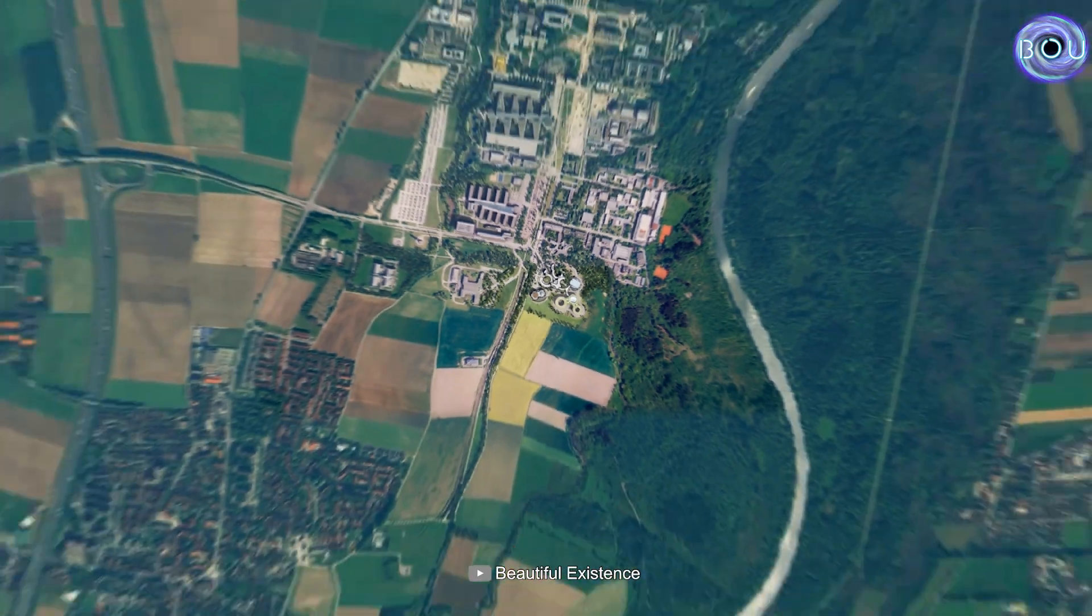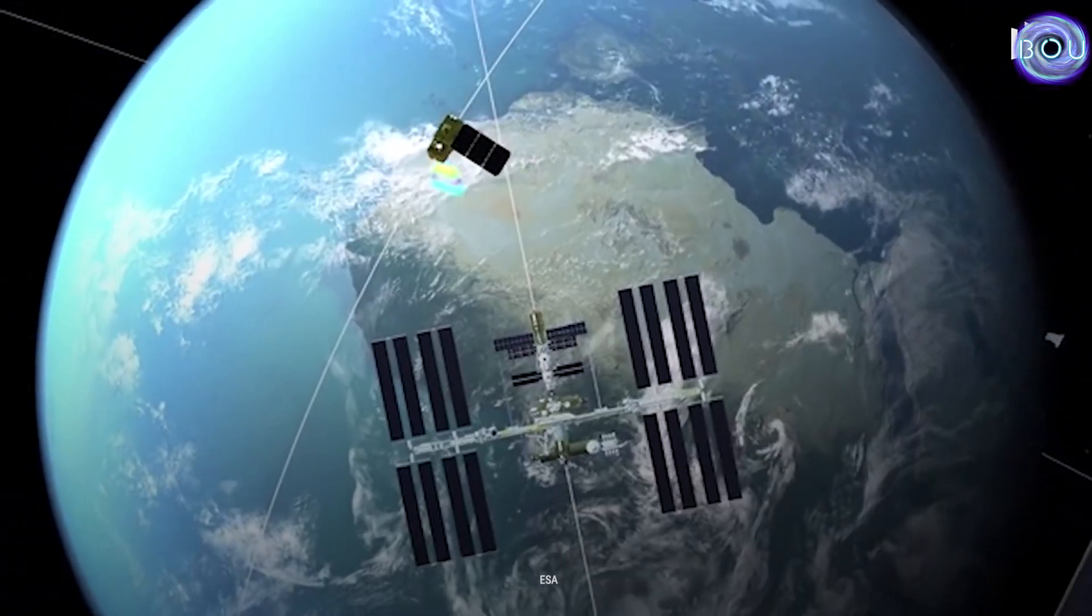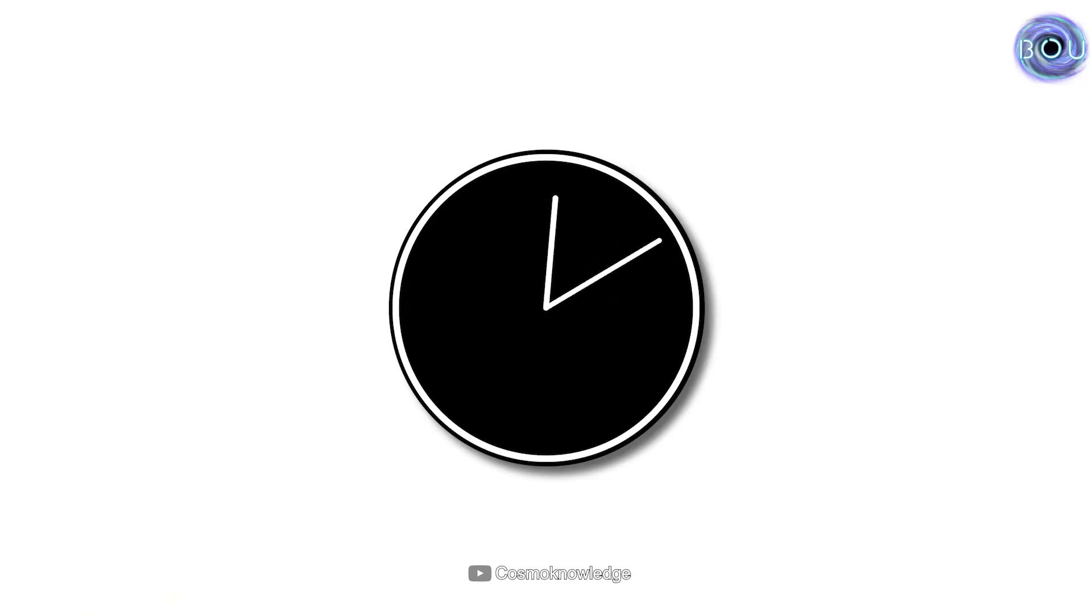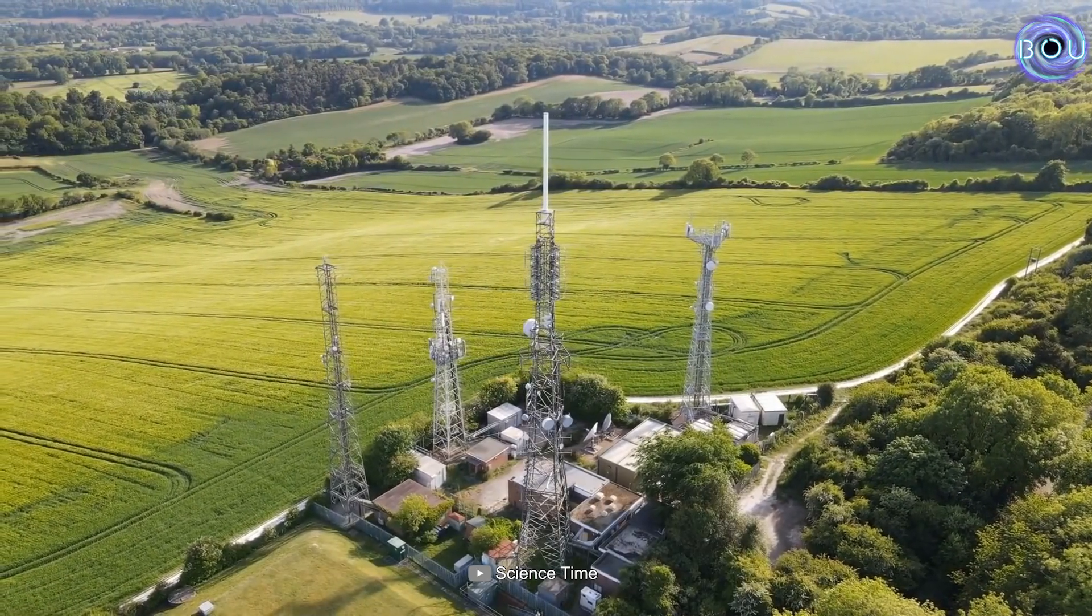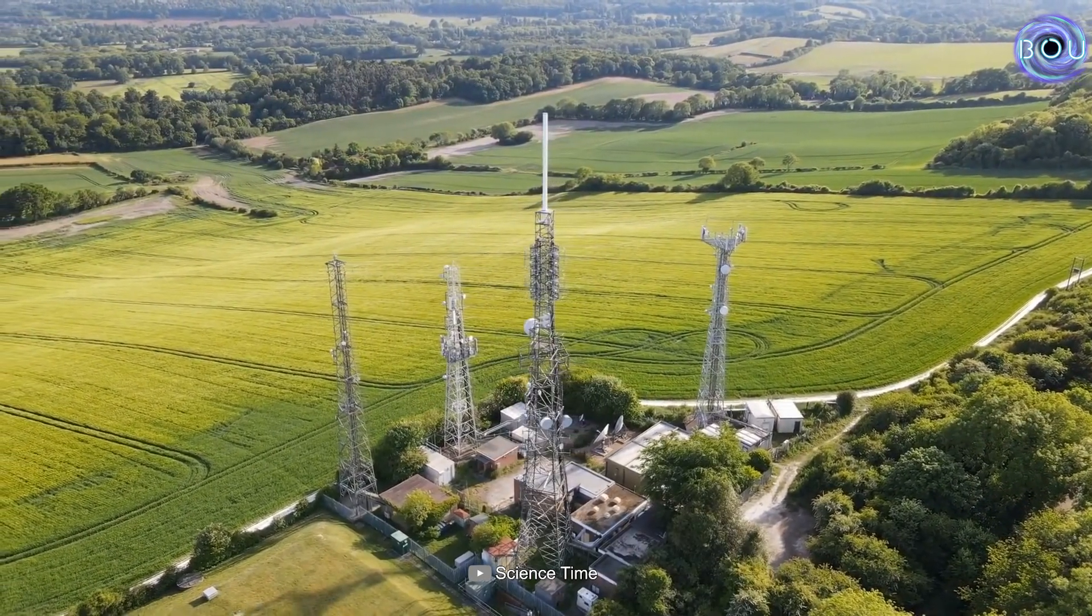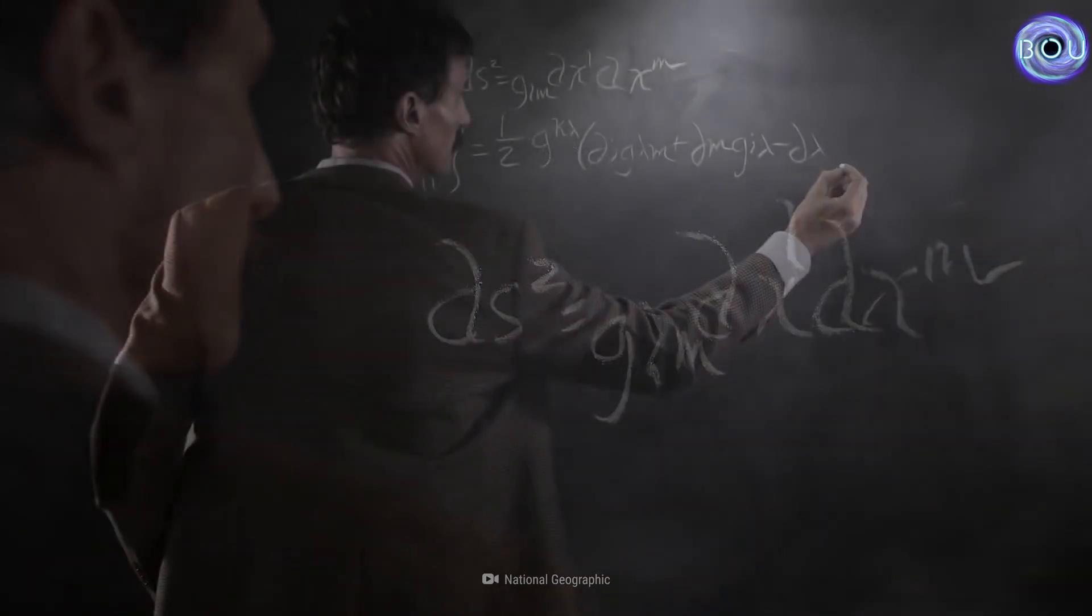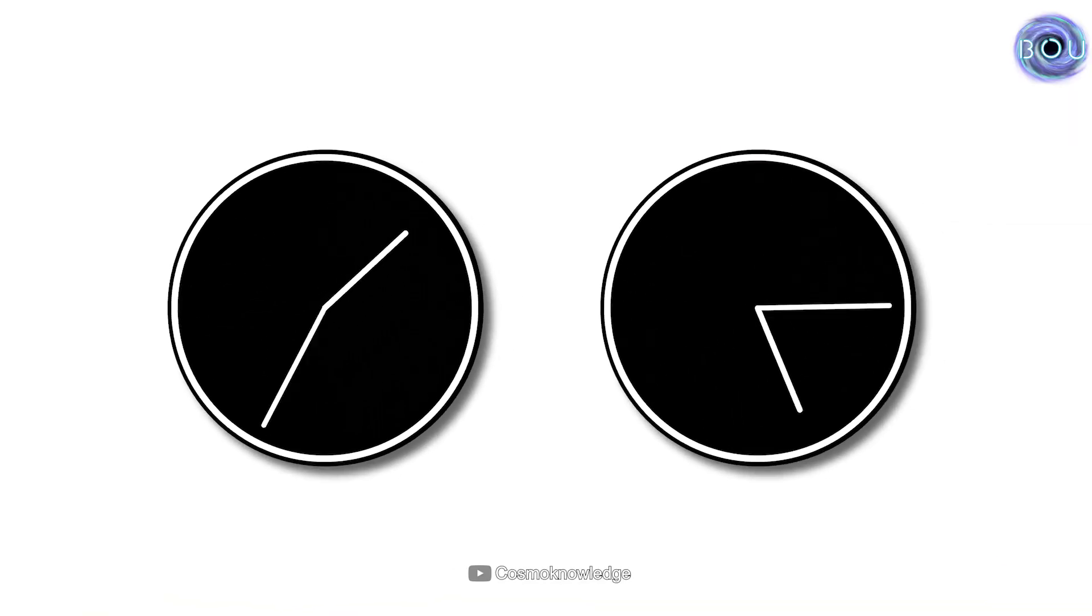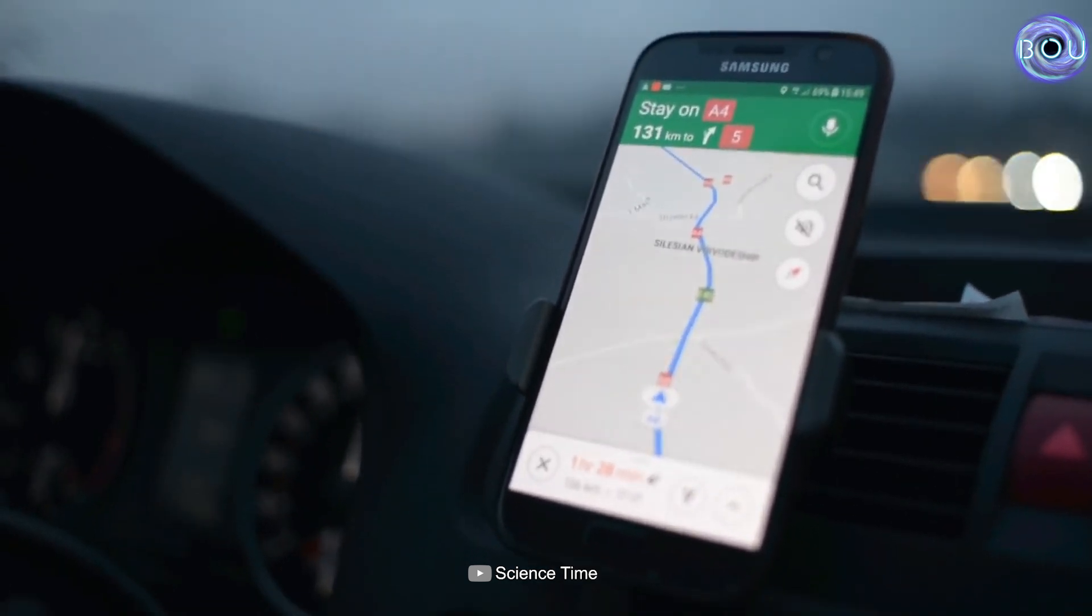But if this distance becomes as large as the distance from the surface of the earth to the GPS satellites responsible for transmitting GPS data, this time difference also becomes larger, and Newtonian physics no longer provides accurate answers. Instead, we need to use Einstein's general theory of relativity equations. Because this time difference between you and the satellite becomes so significant that you can no longer accurately determine your precise location, and you will be confused.